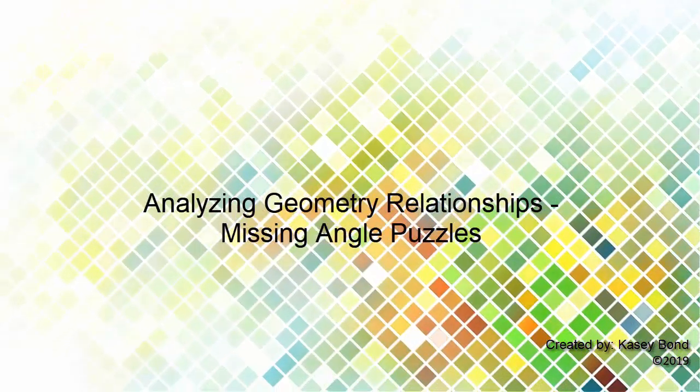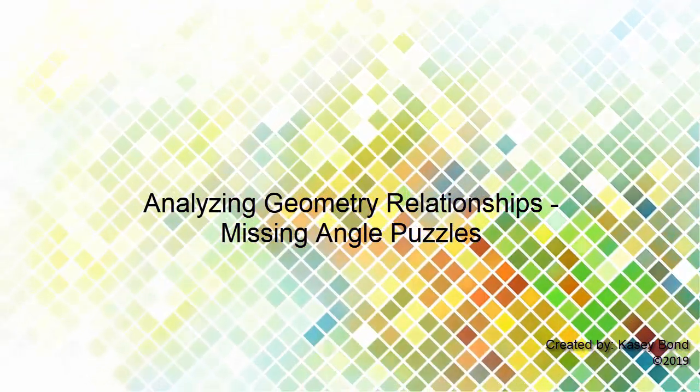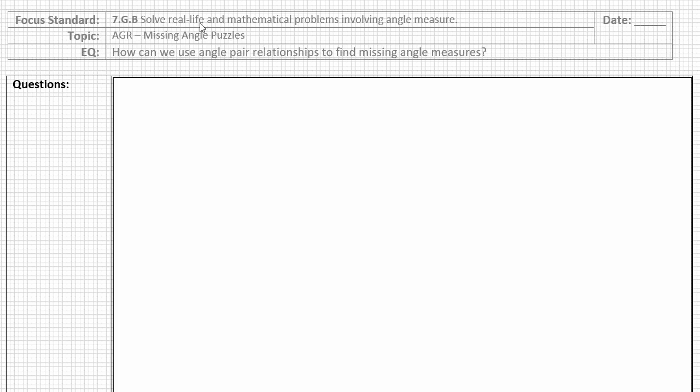For this lesson, our focus standard comes from grade 7 Geometry, Standard B: Solve Real-Life and Mathematical Problems Involving Angle Measure. Our topic comes from Analyzing Geometry Relationships, Missing Angle Puzzles. Our essential question is, how can we use angle-pair relationships to find missing angle measures?